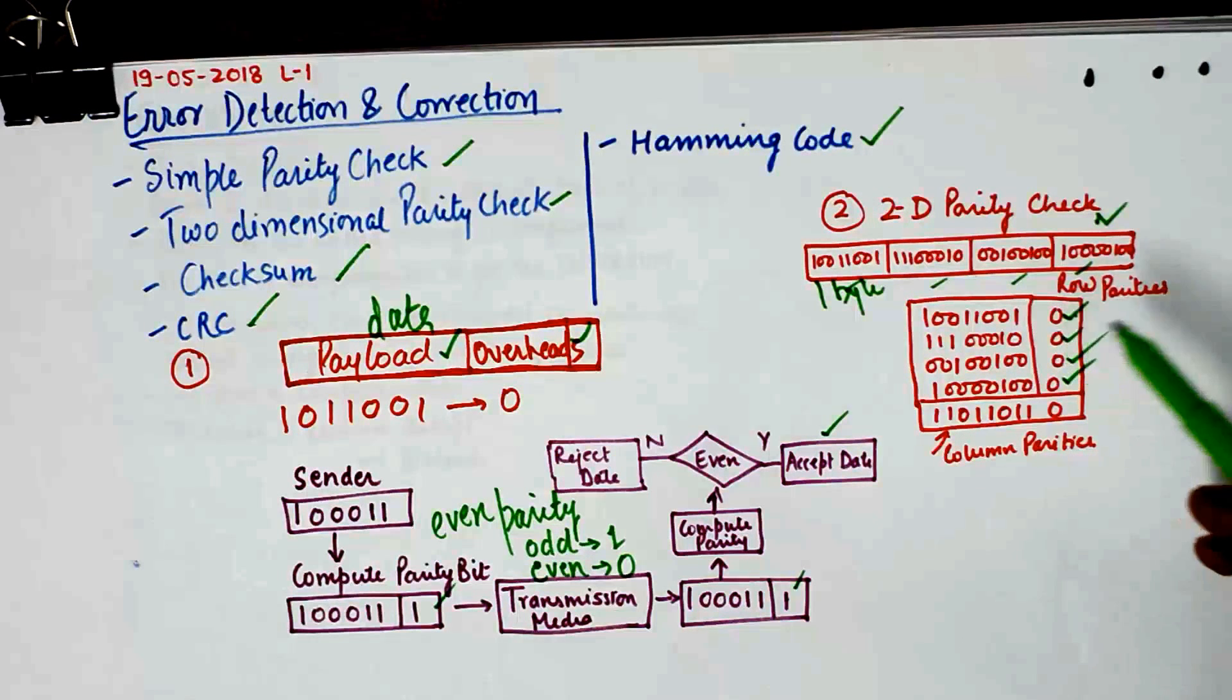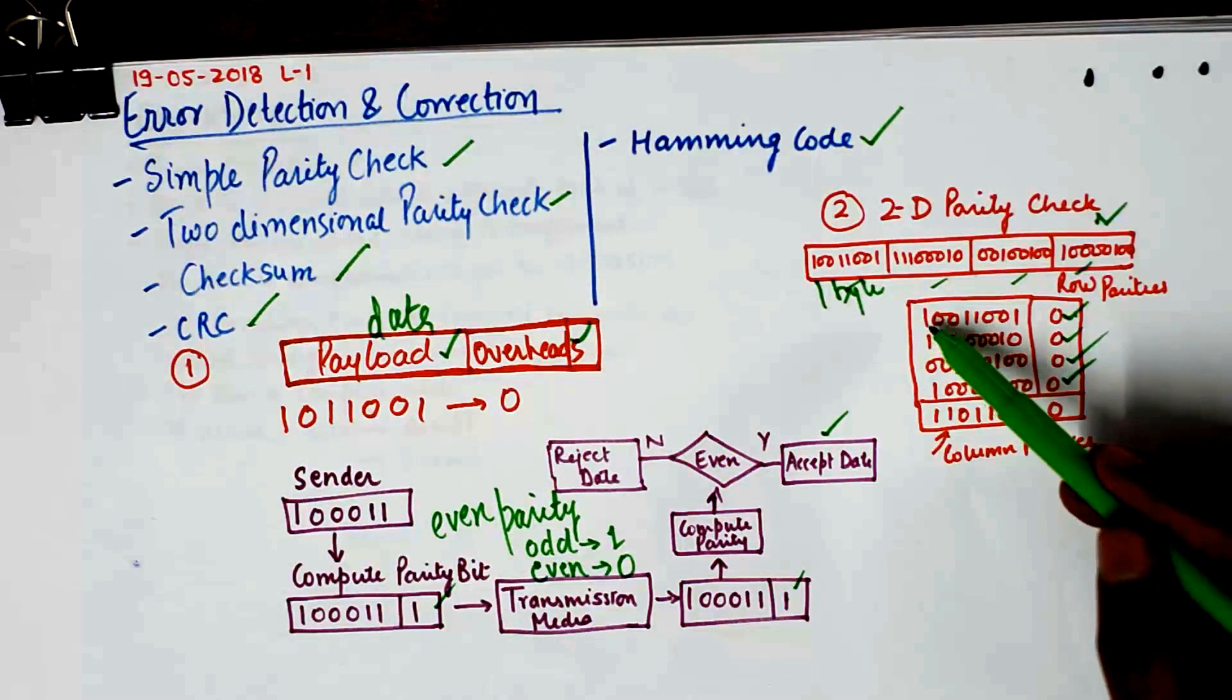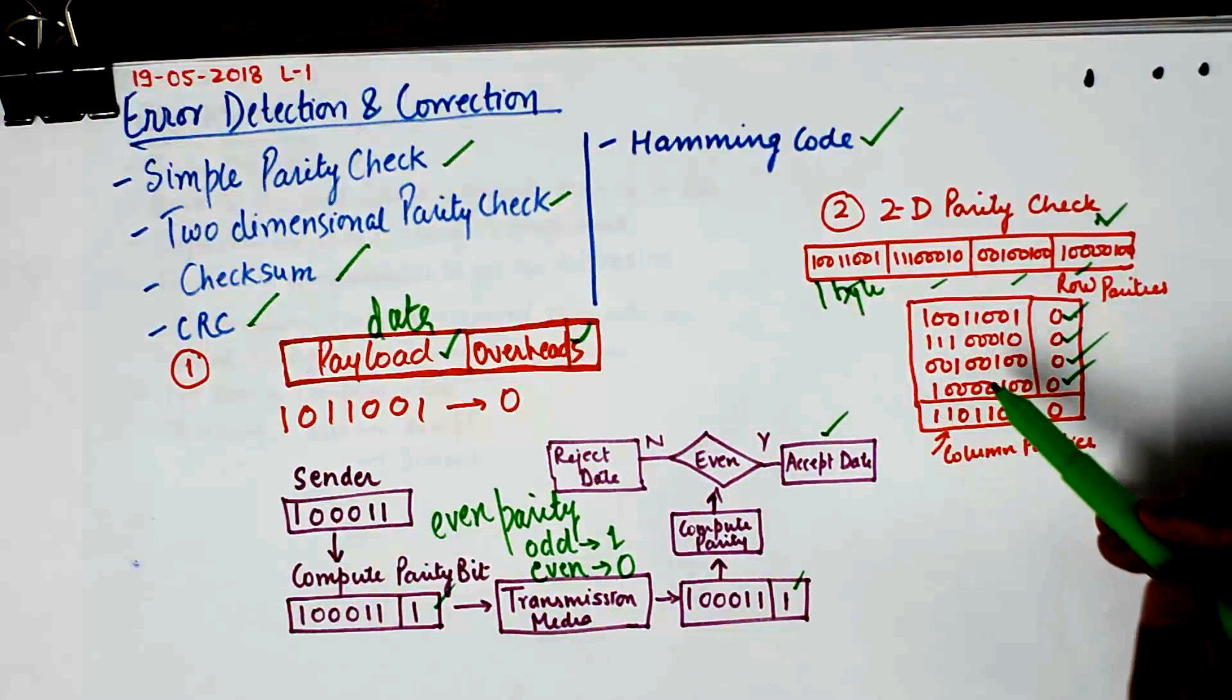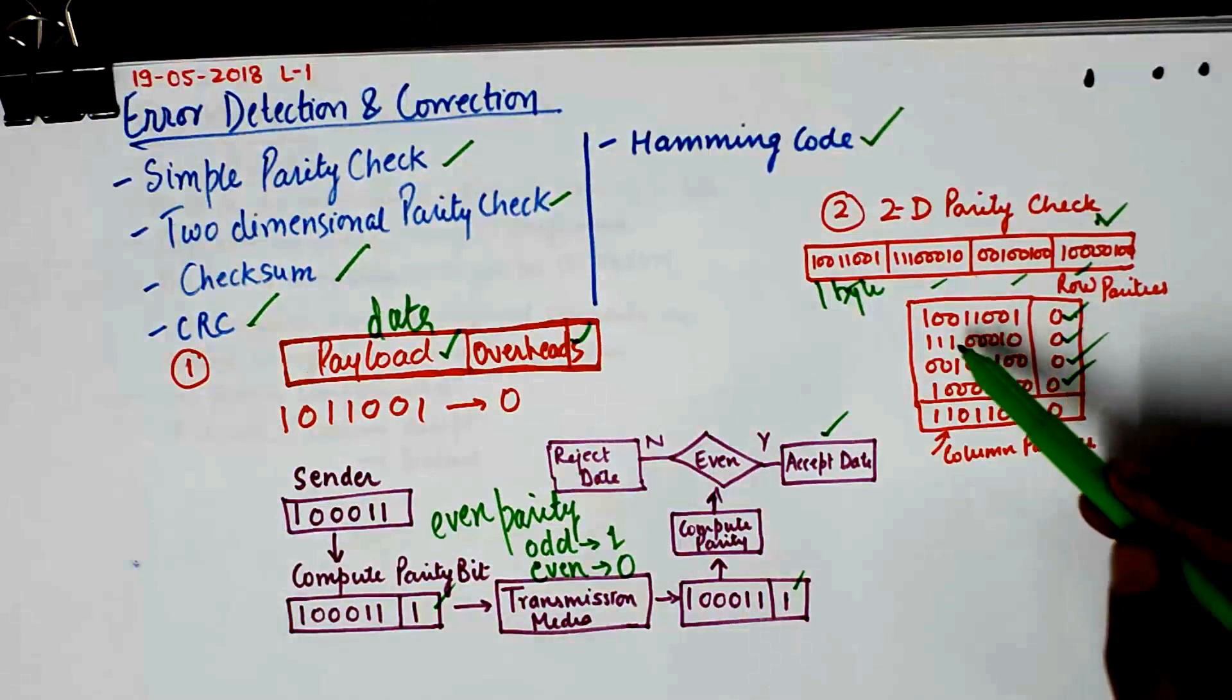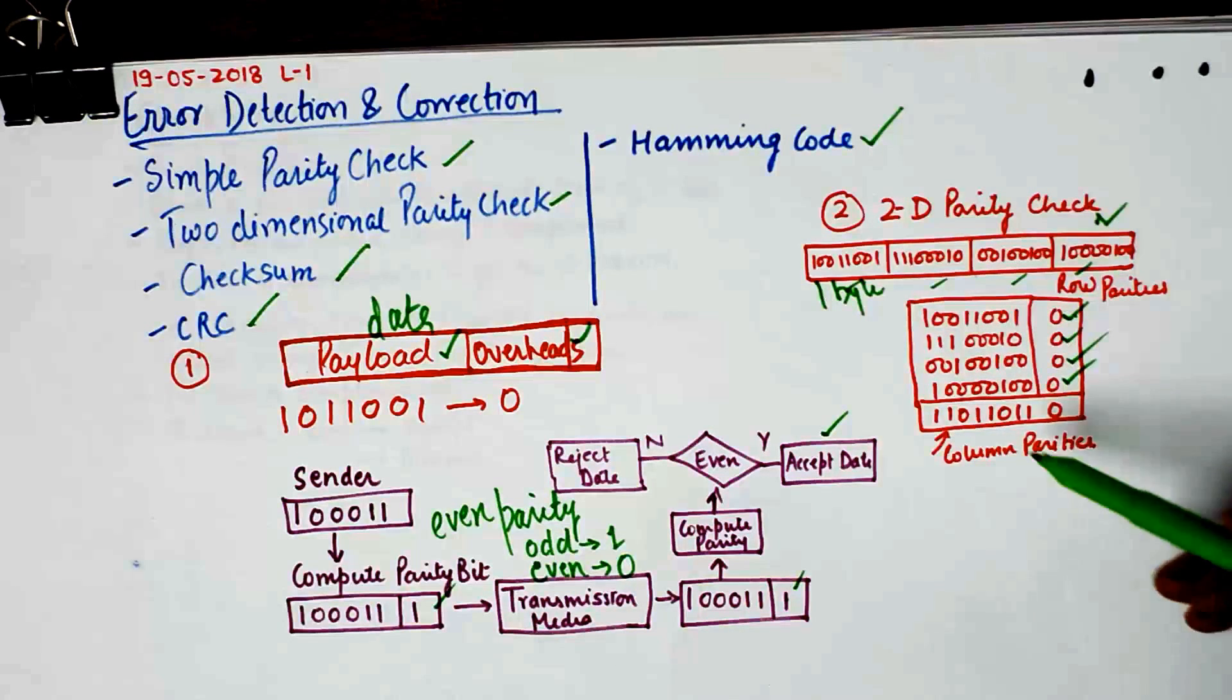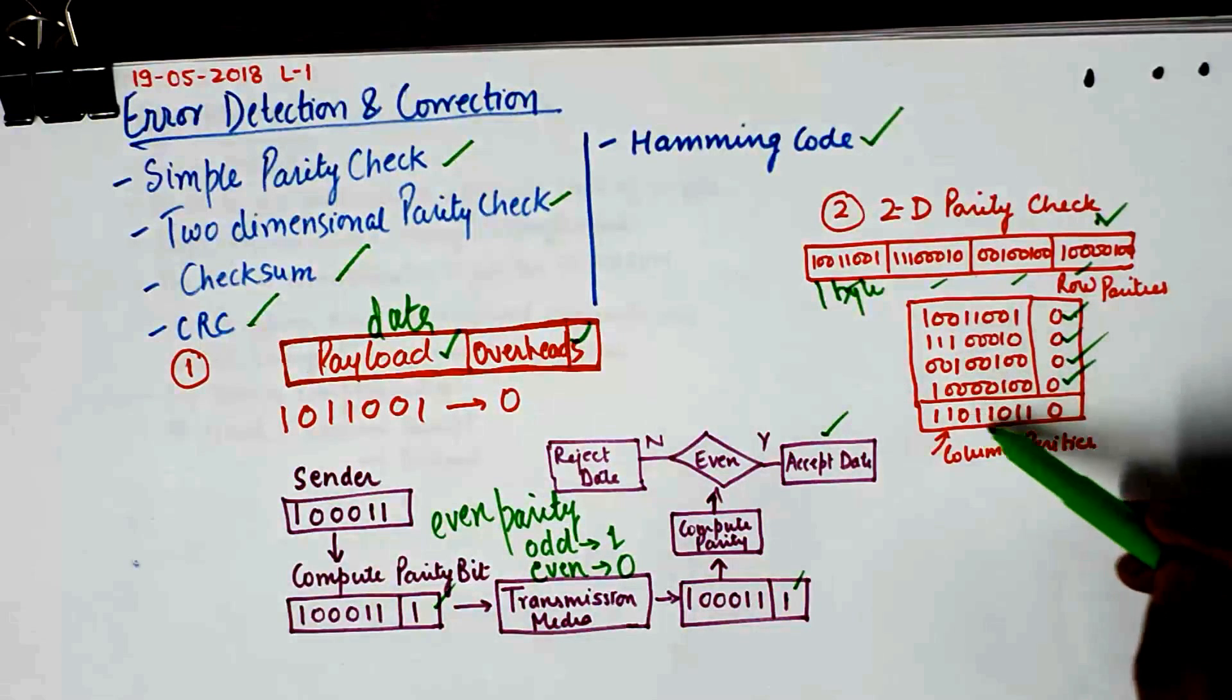Now this is known as the row parities. And in the next step it calculates the column parities. For example, in the first column we have three ones so we put a one here because the number of ones is odd. In the next column also we have just one one so we put a one in the column parity. And so on and so forth.